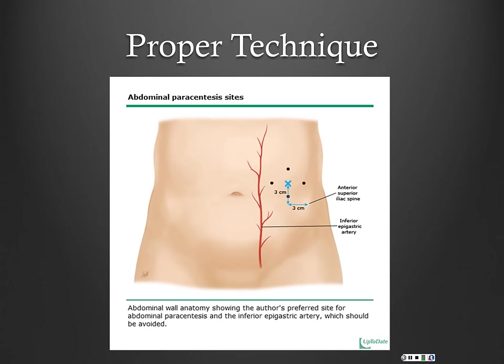Regarding proper technique — the best site to access ascitic fluid is in the left lower quadrant: two finger breadths cephalad to your iliac crest, then two finger breadths medial to that is really your ideal location. You can go midline between the symphysis pubis and the umbilicus, but the problem is that many of our patients are obese, so there's a large fat pad and you have to go through a lot of tissue.